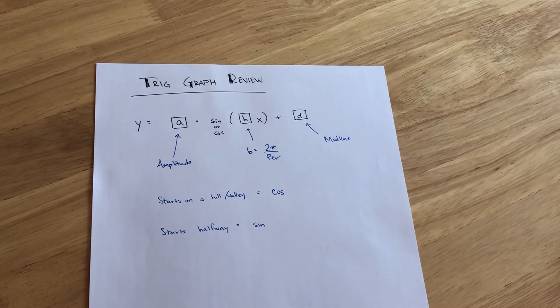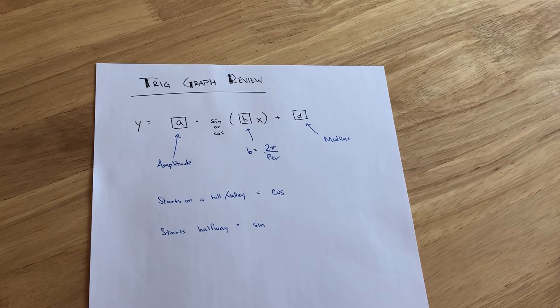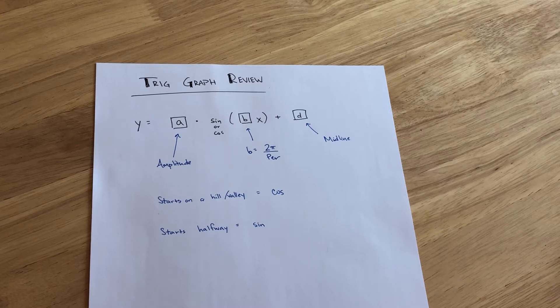Just a quick reminder on our formulas that we've been using. So the format for transformations of sine and cosine functions, y equals a times the sine or cosine of bx plus d.